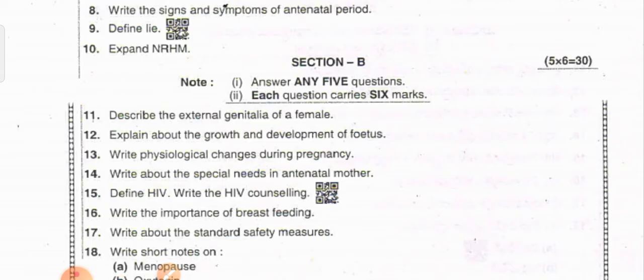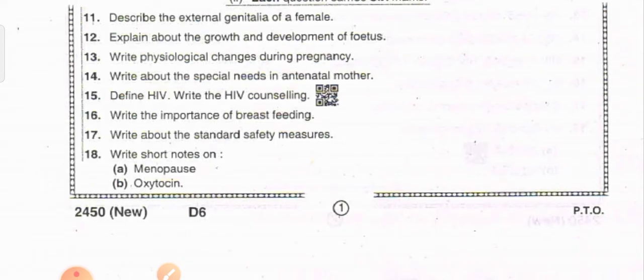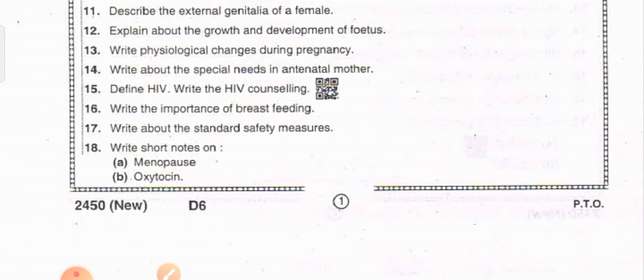Describe the external genitalia of a female. Explain about the growth and development of the fetus. Write physiological changes during pregnancy. Write about the special needs in antenatal mother. Define HIV, write the HIV counseling. Write the importance of breastfeeding. Write about the standard safety measures. Write short notes on menopause and oxytocin.